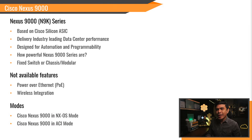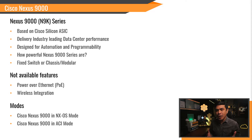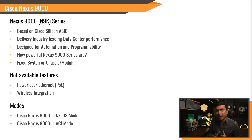Cisco Nexus 9000 series uses Cisco Silicon ASIC, or Application-Specific Integrated Circuit. We use Cisco Nexus 9000 in industry-leading data centers. In short, the Nexus 9K is the switch we use in large data center environments.